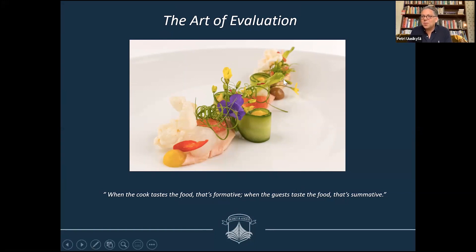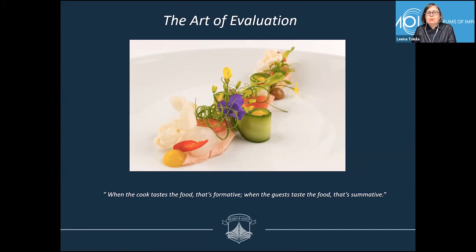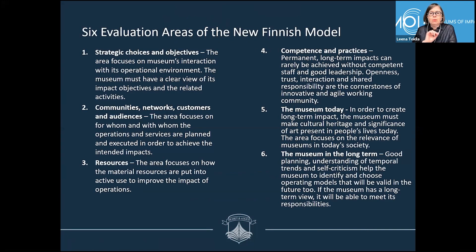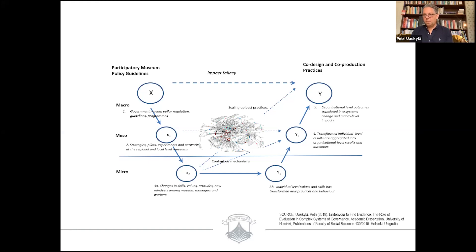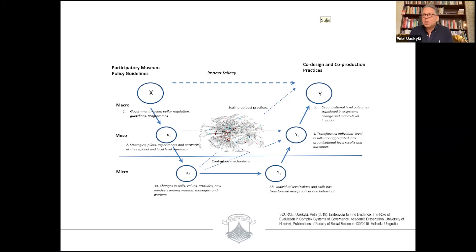The slide previous to this one — the macro, meso, and micro model — I think they are essential for us to understand. This is the core of evaluation and understanding how impact is created. The original source is actually James Coleman's The Foundations of Social Theory, 1990. But James Coleman has only a macro and micro level, so I've added the meso level as well. I think it's important to have organizations included.